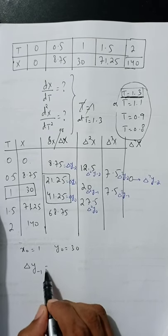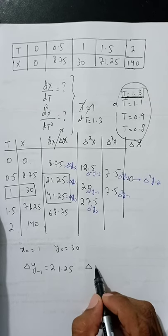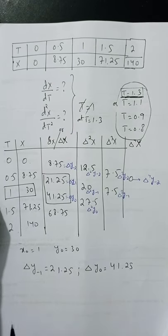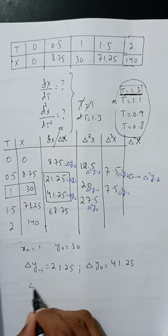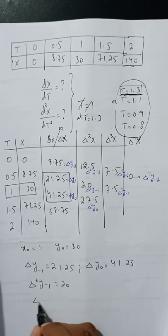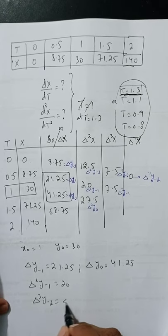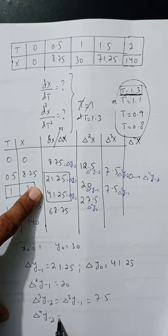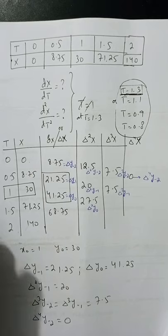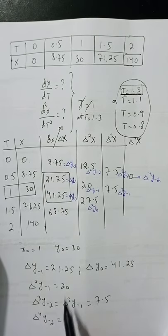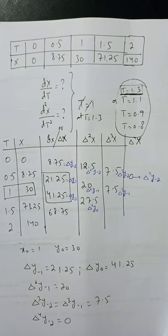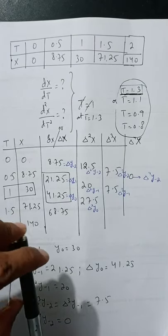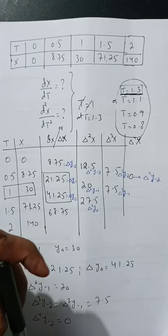So Δy₋₁ = 21.25, Δy₀ = 41.25, Δ²y₋₁ = 20, Δ²y₋₂ = 20 (coincidentally equal here). You now have all these indexed values. Simply substitute them into your first order derivative formula and second order derivative formula which we derived, and you will get the final answer. That is all for central differentiation in this example.